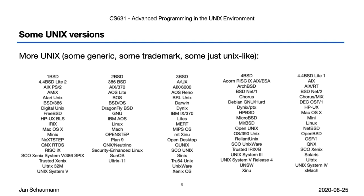Throughout the last 50 years we've seen a perhaps surprising number of Unix systems. Some are all-caps UNIX systems which derive directly from the AT&T code. Some are trademarked Unix versions, meaning they have undergone certification to meet the Unix specification. This trademark certification is expensive, so not many companies do that, and every time you make a change you have to undergo certification again. Therefore, a number of operating systems providers, especially open source projects, would not undergo certification — even if they are a so-called genetic Unix. And then there are Unix-like operating systems: those that share no lineage or code but look and behave just like a Unix system.